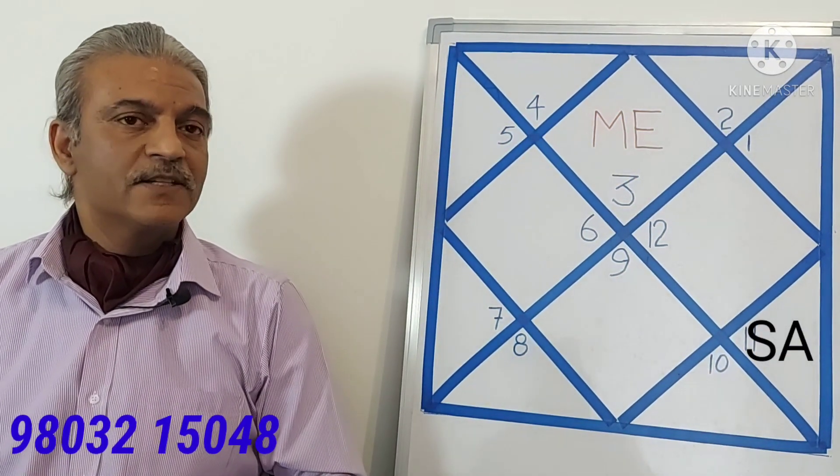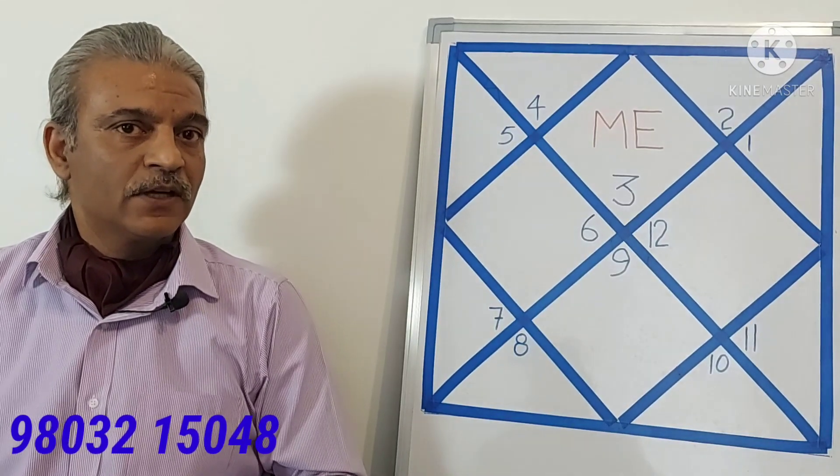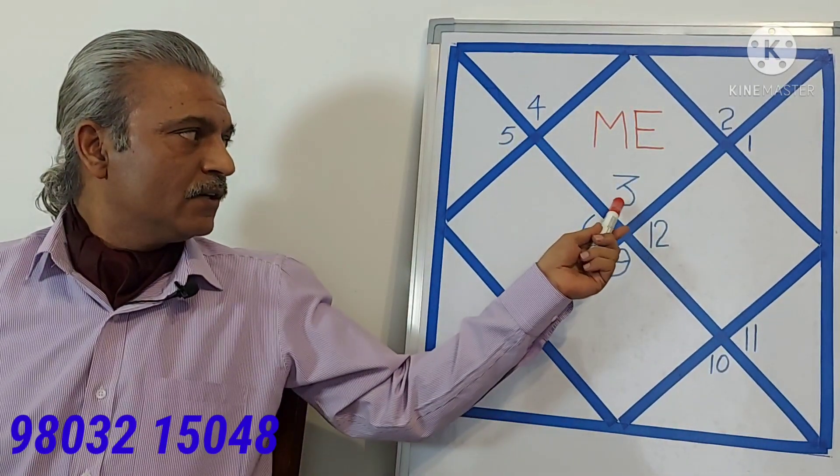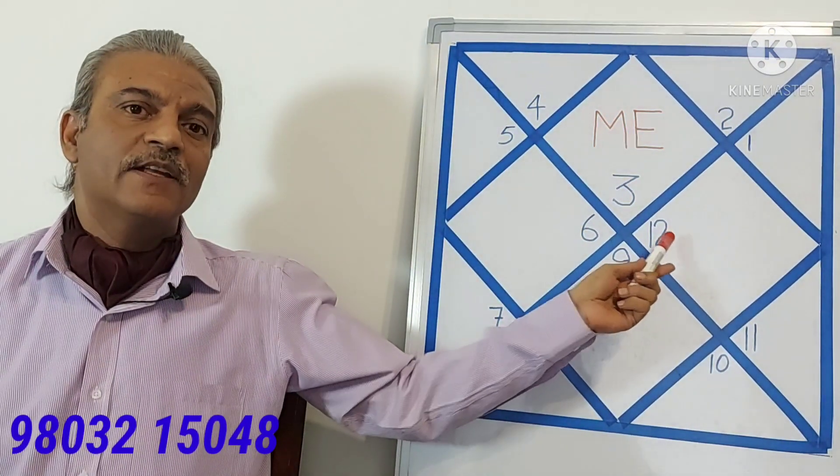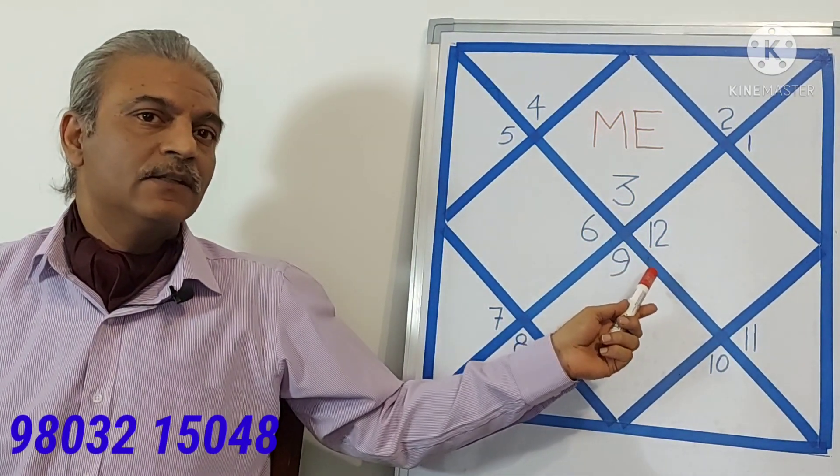In this horoscope, there is a peculiarity which you must note is that 3, 6, 9 and 12 are in the central or in the Kendra houses.